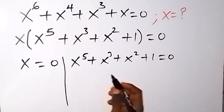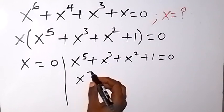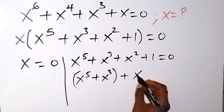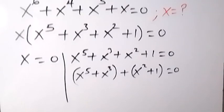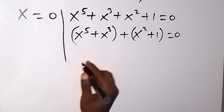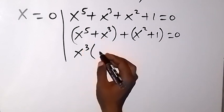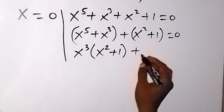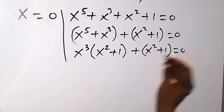From the second factor, we can group the terms into two pairs: x raised to power 5 plus x raised to power 3, grouped together, then plus x raised to power 2 plus 1, grouped together, which equals 0. Factoring what is common from the first group, we take out x raised to power 3, leaving x squared plus 1.